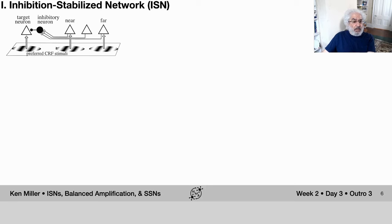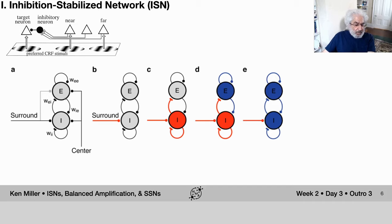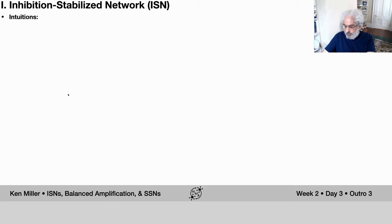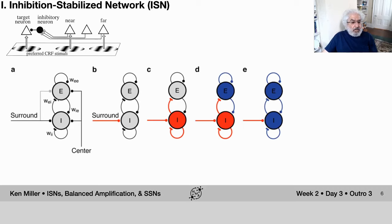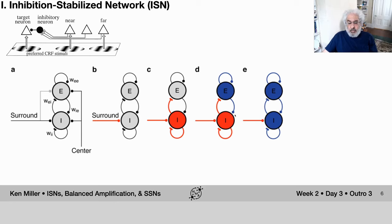This works as follows. We model a population of excitatory cells and a population of inhibitory cells connected to themselves and to one another. We imagine the center stimulus is on, so the neurons are at a fixed-point level of activation. Now we add the surround. The surround goes to both excitatory and inhibitory cells, but for simplicity let's consider it only goes to inhibitory cells. That raises the firing rate of the inhibitory cells, which increases inhibition to the excitatory cells, lowering their firing rate. That decreases the excitation back to the inhibitory cells.